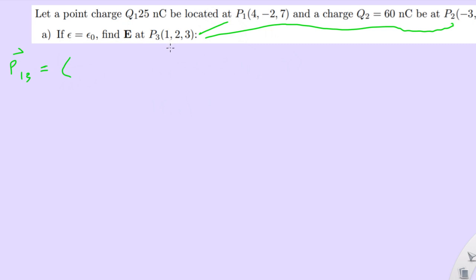Do that to show it's a vector. Point 1 minus point 3. So 1 minus 4 is negative 3, 2 minus negative 2 is 4, 3 minus 7 is negative 4. So find the magnitude, 2, 1, 3.